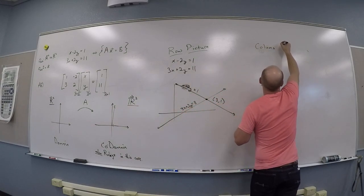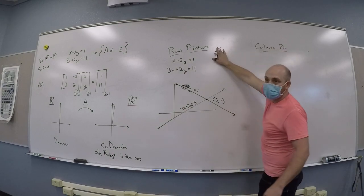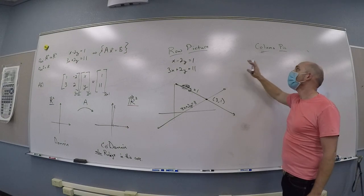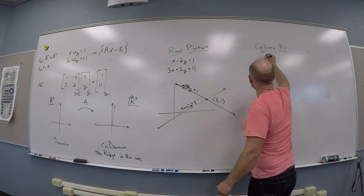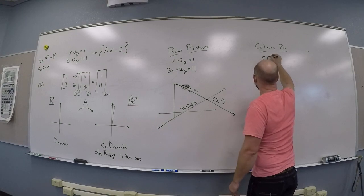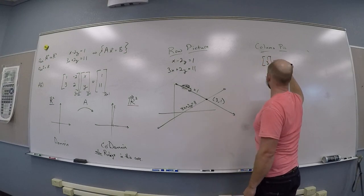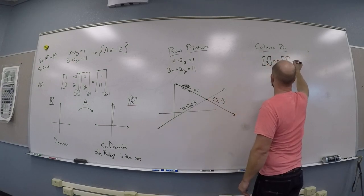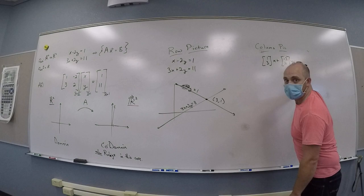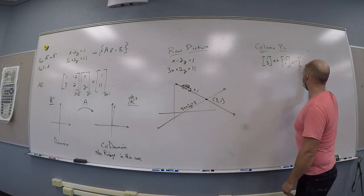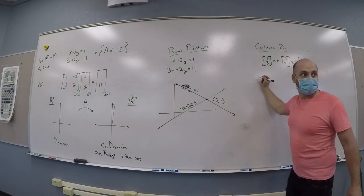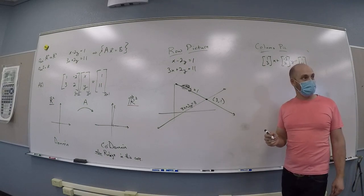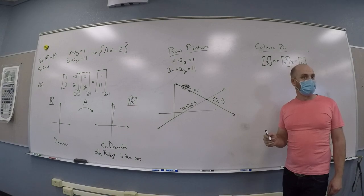So you can use the row picture—that amounts to plot the lines, see where they intersect. The column picture is kind of this new trick, which is you can take the vector (1, 3) multiply by x, add to that the vector (-2, 2) multiplied by y. I'm supposed to end up with (1, 11) here, and you can kind of guess and check your way to (3, 1). You guys see that?